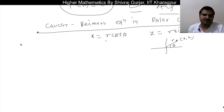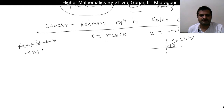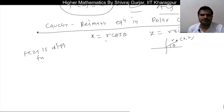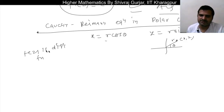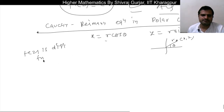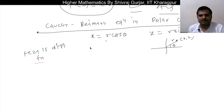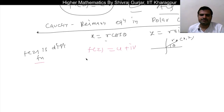Now, f(z) is analytic — you can say f(z) is a differentiable function. We are writing the statement of the Cauchy-Riemann equations: if f(z) is differentiable, then we say the Cauchy-Riemann equations hold. And f(z) is nothing but u + iν.